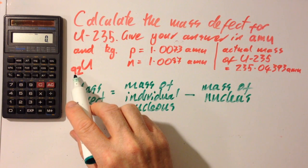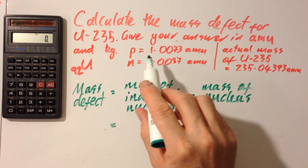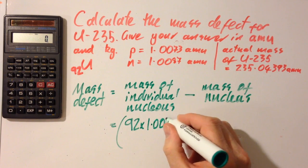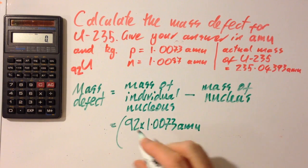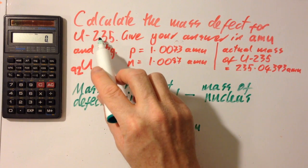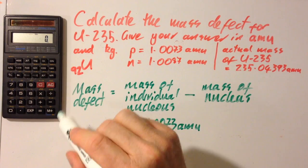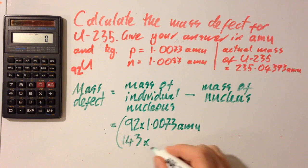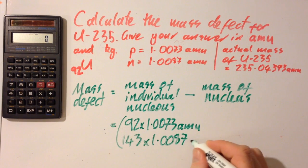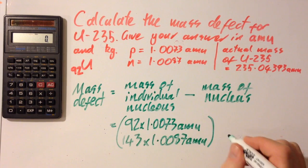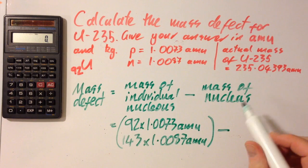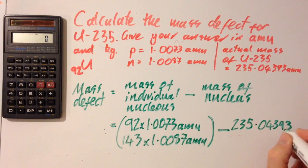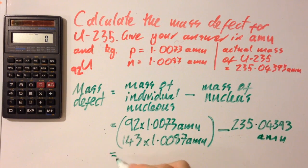Well, I've got 92 protons, because the atomic number for Uranium is 92, and that's the mass of a proton. So I've got 92 times 1.0073 AMU, and I've got 235 minus 92 neutrons. The difference between the atomic mass and the atomic number is the number of neutrons. So that's 143 times 1.0087 AMU. And all that is minus the mass of the nucleus, which is given in the question, 235.04393 AMU. So what does that come out at?